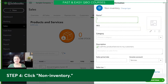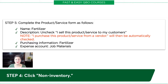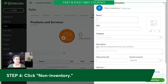Here we are, and this is very similar. Let's take a closer look at our exercise. In step five, we're going to complete the products and services form as follows: what we are buying is fertilizer. We're going to uncheck 'I sell this product or service to my customers,' because it's not something we sell. And because it's not something we sell, QuickBooks is going to automatically say it must be something that you buy. We'll put in the description, and then put in the expense account, which is Job Materials.